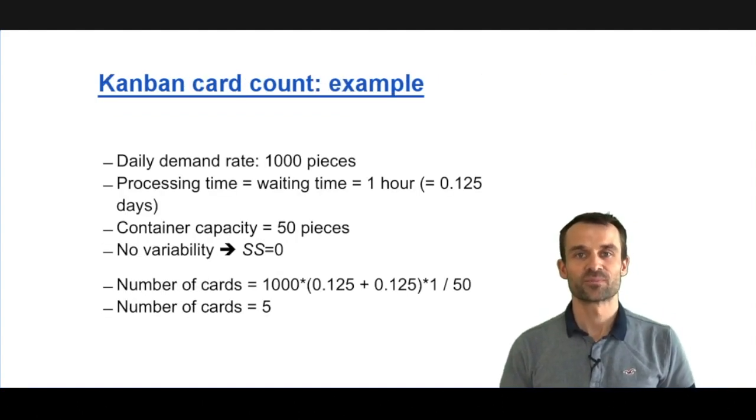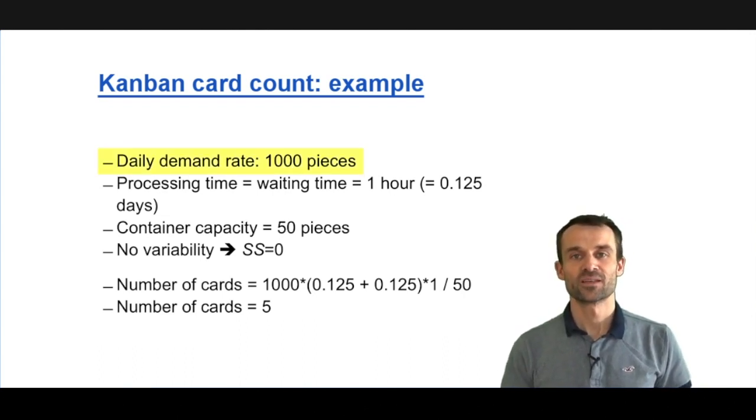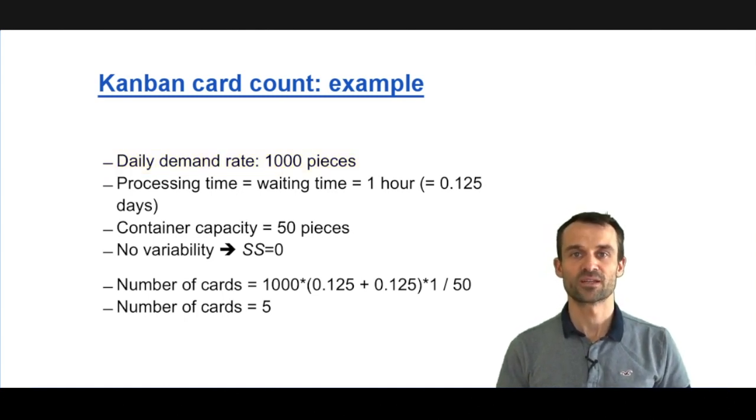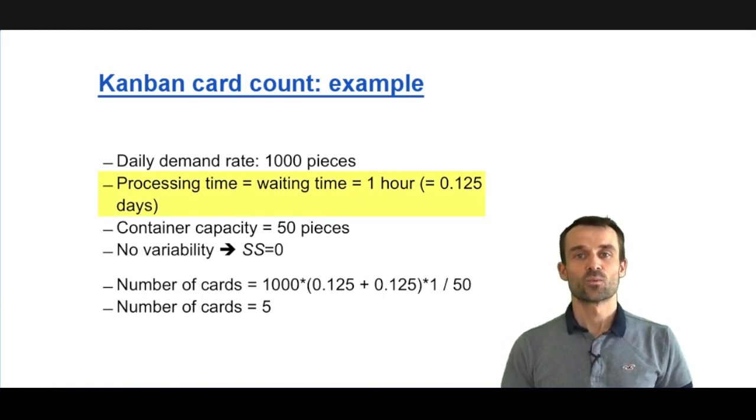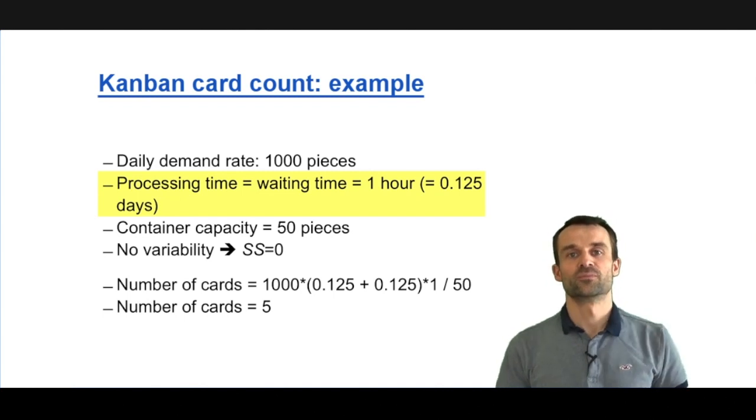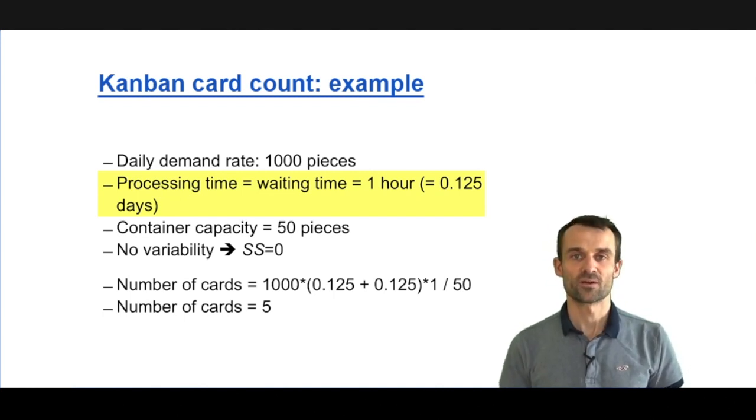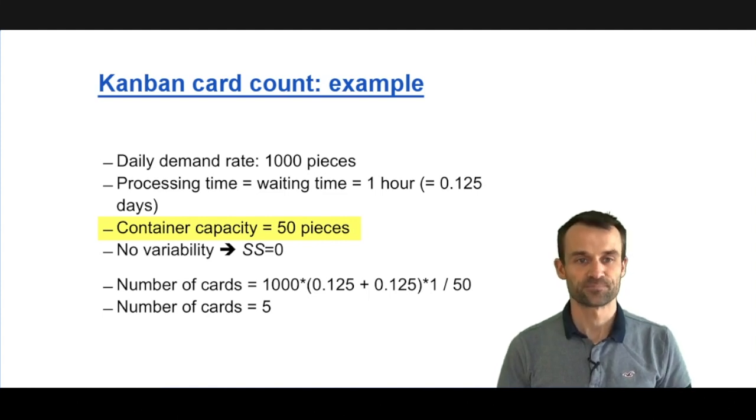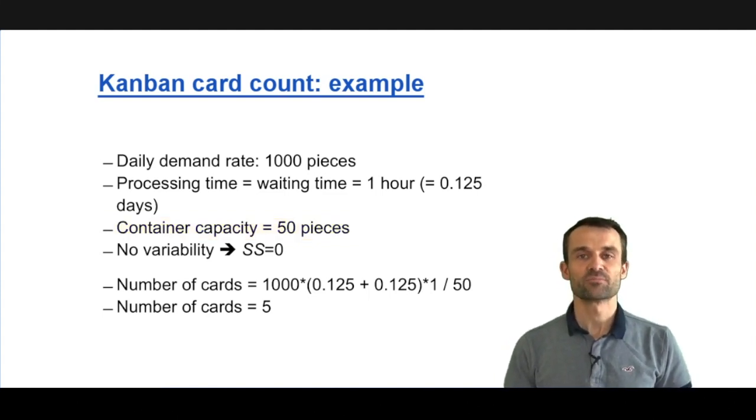Let's apply this to a simple example. Assume we have a product with a daily demand rate of 1000 units. Production takes one hour and waiting time before being produced is also one hour. Production happens in batches of 50 units, so our container quantity is 50. To keep it simple, let's assume there's no variability so we don't need a safety factor.